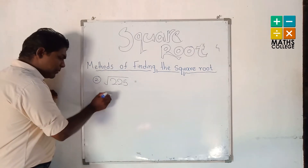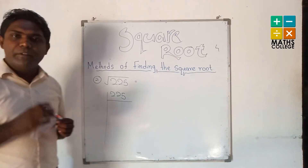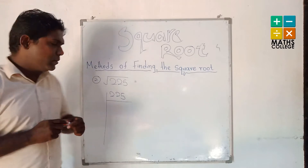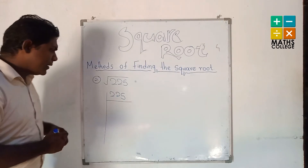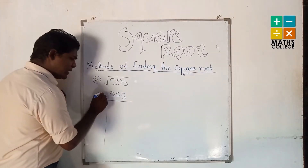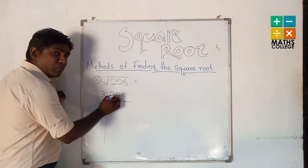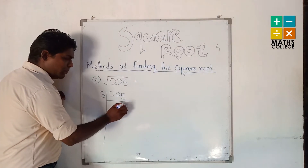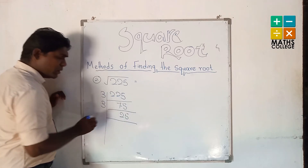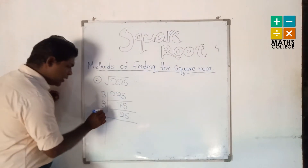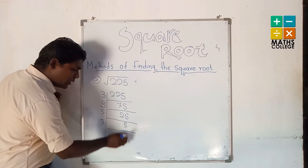Like the previous one, we divide 225 by prime numbers. We cannot divide by 2 because the last digit is 5 — it is an odd number. So we divide by 3. 225 ÷ 3 = 75. Remain: 15 ÷ 3 = 5. Then divide by 5: 5 ÷ 5 = 1.